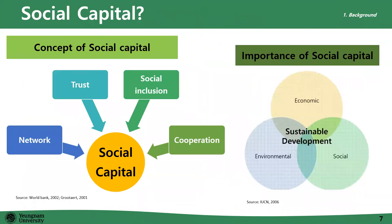Social factors are very diverse, complicated, and inherited in society, so it is difficult to measure their impact on forest programs. However, we can explain them using the concept of social capital. Social capital is an intangible capital in society, usually known as consisting of networks, trust, and social inclusion and cooperation. Social capital is also recognized as an important factor of sustainable development due to its contribution in reducing transaction costs and motivating economic activities in local communities.